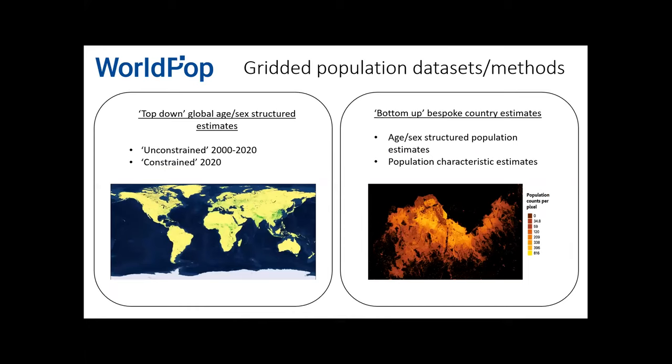In WorldPop we produce two broad types of datasets. The first is what we call top-down, which we produce for every single country in the world. The second, through the Grid3 program, we produce in collaboration with governments in situations where census data is outdated or there are gaps in enumeration data.